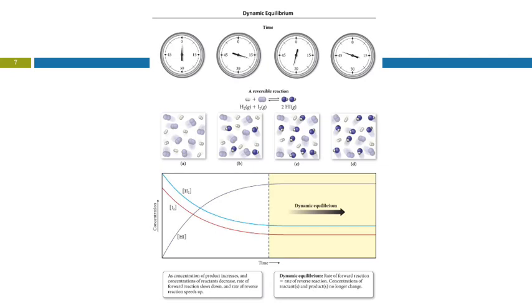Initially, there's no hydrogen iodide, and so its reaction cannot occur. As these molecules react and form some product, now we can have some of the reverse reaction occurring. We're forming product, and as we form more and more product, that reverse reaction gets faster and faster.